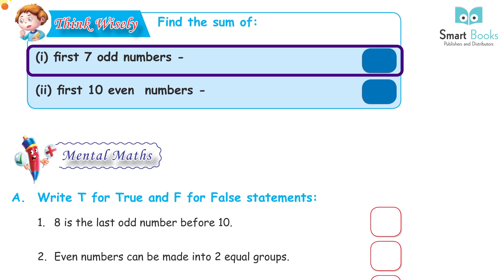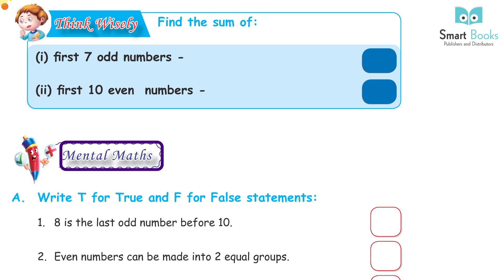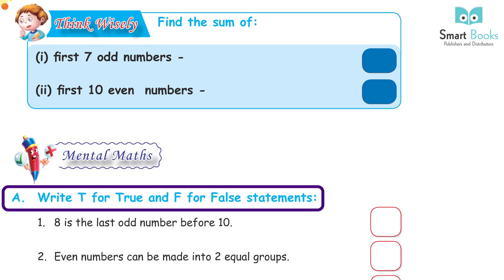Find the sum of: one — the first seven odd numbers, answer: forty-nine. Two — the first ten even numbers, answer: one hundred and ten.